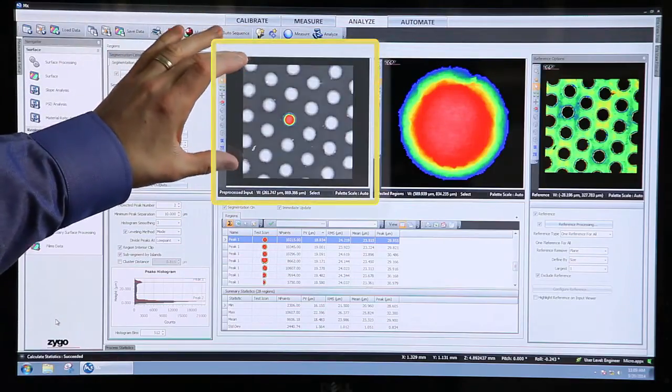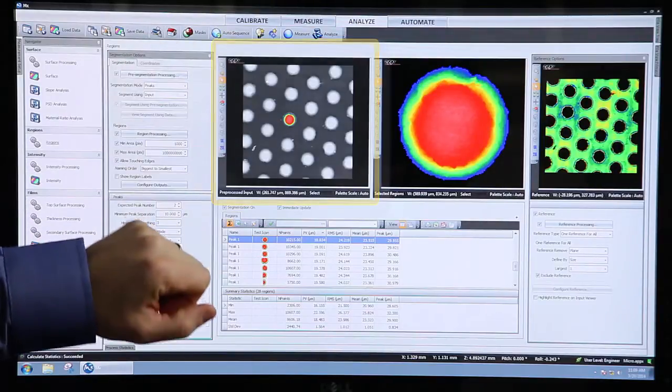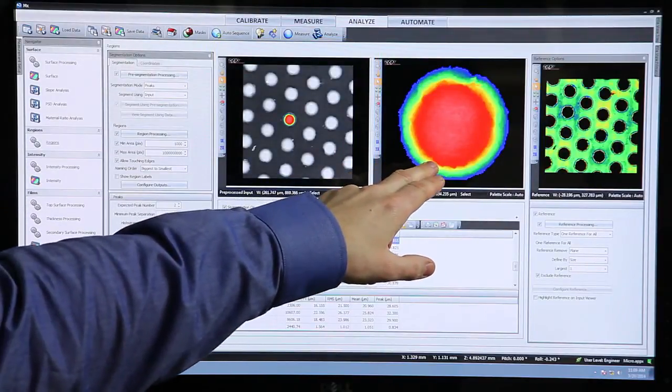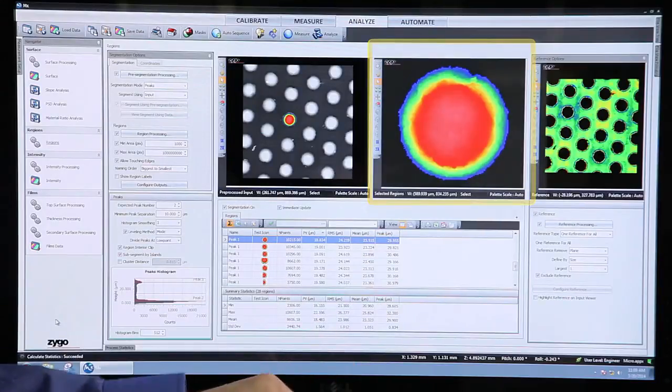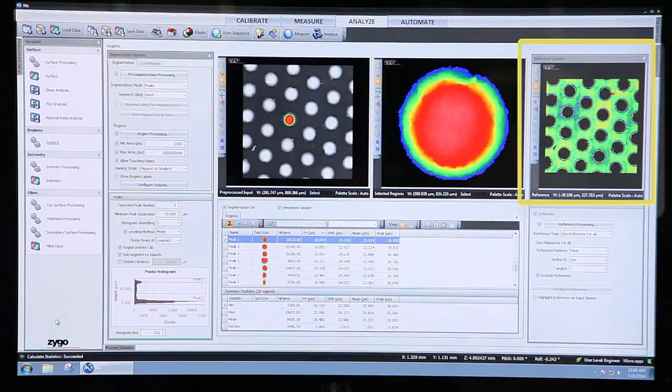It presents you your input data over here on the left, presents your active region, the one that you've got selected here in the middle, and then if you've got one defined, your reference region off to the right.